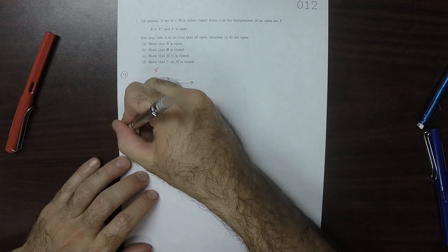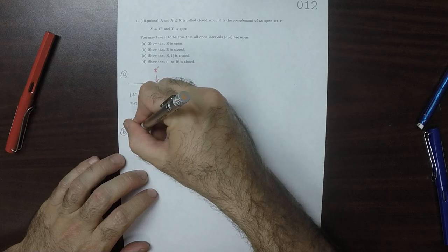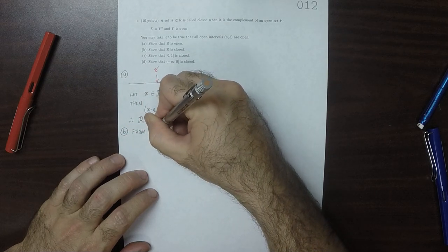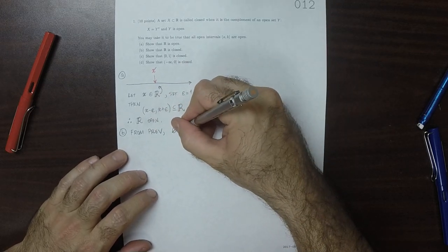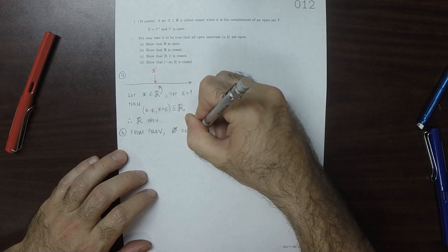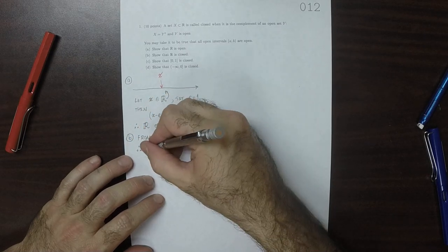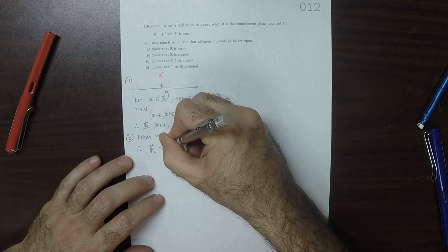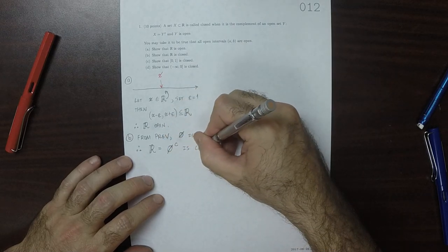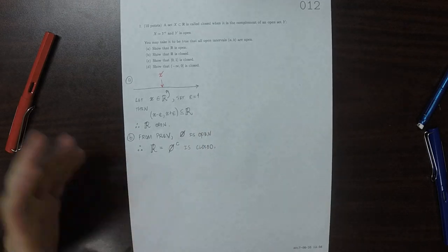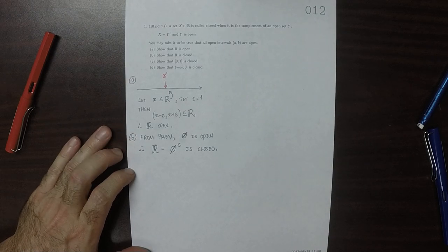Okay, so part B. From the previous exercise, we know that the empty set is open. Therefore, the reals, which are the complement of the empty set, is closed. Because that's what it means to be closed.